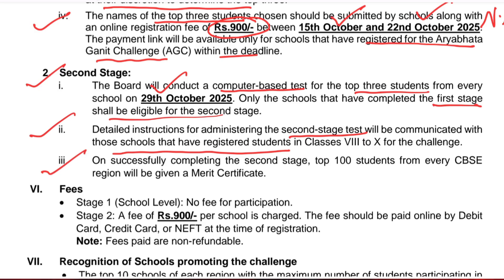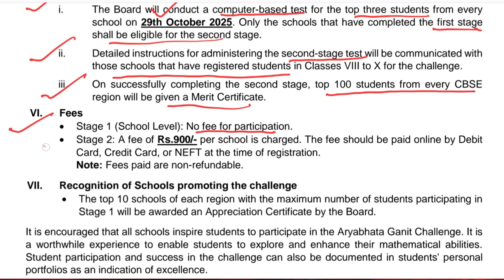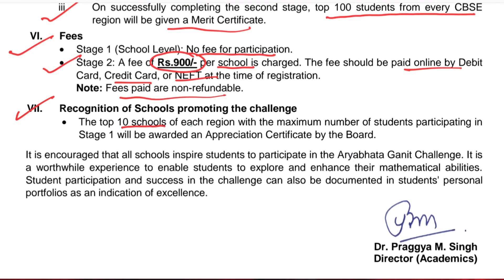On successful completion of Stage 2, the top 100 students from every CBSE region will be given a merit certificate. The Stage 2 fee is 900 rupees per school, payable online only using debit card, credit card, or net banking, and this fee is non-refundable. Additionally, the top 10 schools of each region with the maximum number of students participating in Stage 1 will be awarded an appreciation certificate.